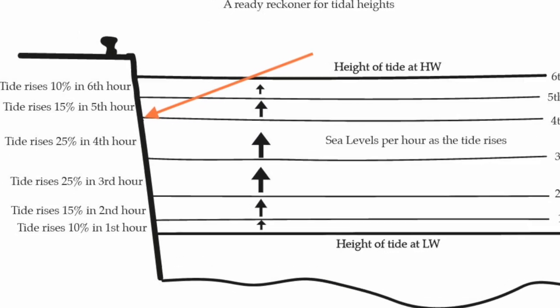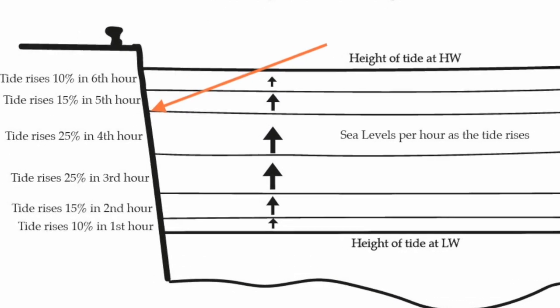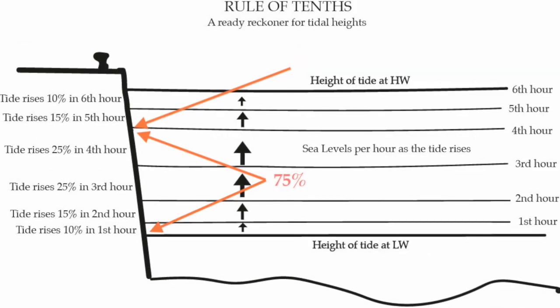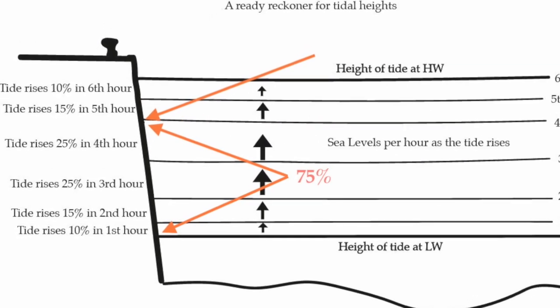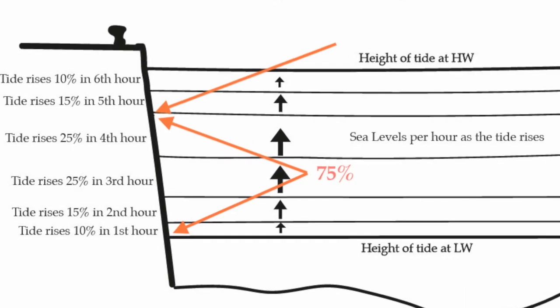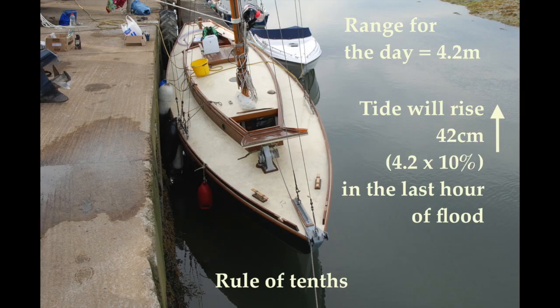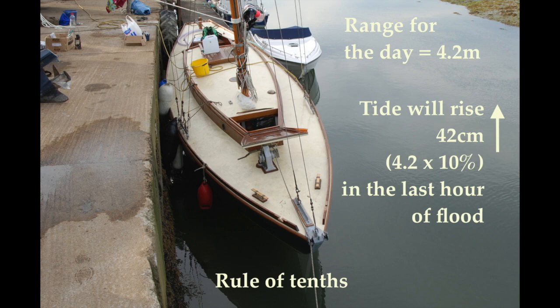Thus, if you are two hours before high water, you can assume that 75% of the tidal range for the day has already risen above the height of low water. If the tidal range is 4.2 metres, then you can assume that the tide will rise just 42 centimetres more in the last hour of tide. Roughly — and remember, this is only a rough guide.